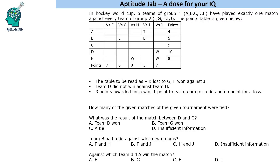Hello everyone, welcome to Aptitude Lab. This is a set based on games and tournaments. There are five teams in two groups: Group 1 has teams A, B, C, D, E and Group 2 has teams F, G, H, I, J. They played in a hockey tournament and each team of Group 1 played one match against each team of Group 2.